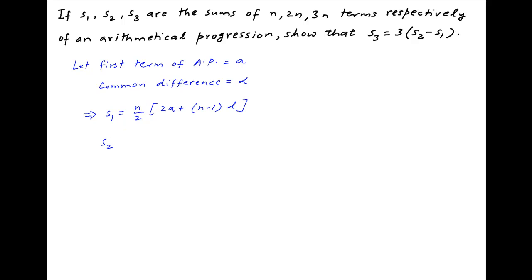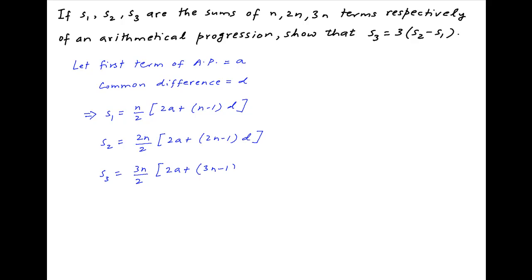The sum of the first 2n terms is equal to 2n upon 2 times in brackets 2a plus 2n minus 1 times d. And the sum of the first 3n terms, S3, is equal to 3n upon 2 times in brackets 2a plus 3n minus 1 times d.